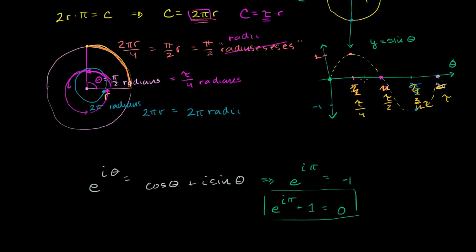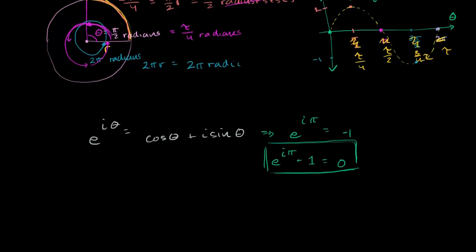The last thing that strong pi defenders would say is — you just pointed out one of the most beautiful identities in mathematics. How does tau hold up to this? Let's just try it out and see what happens.